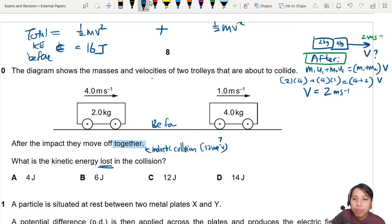So half Mv square here for this second trolley. So that will give you, if you plug in everything correctly, 2 Joules. So the total before is 16 plus 2, 18 Joules.